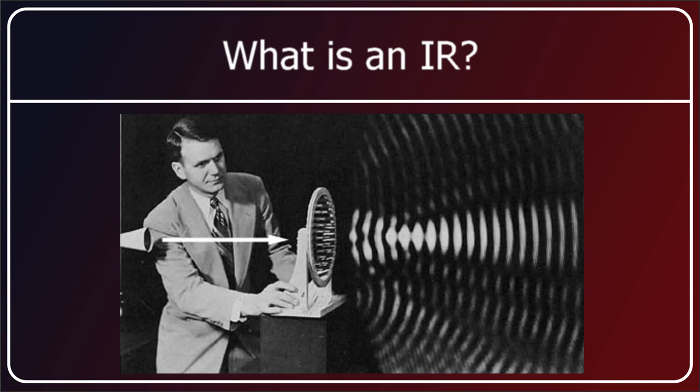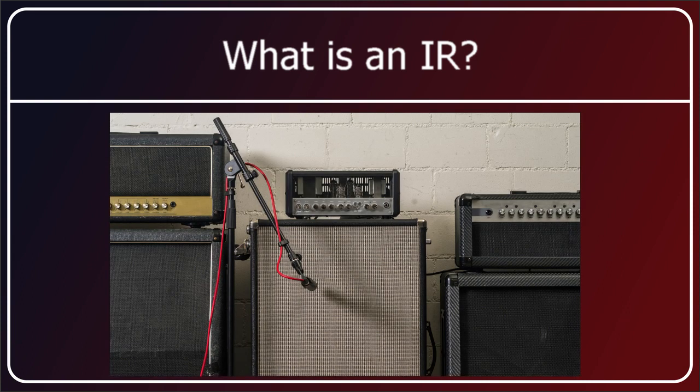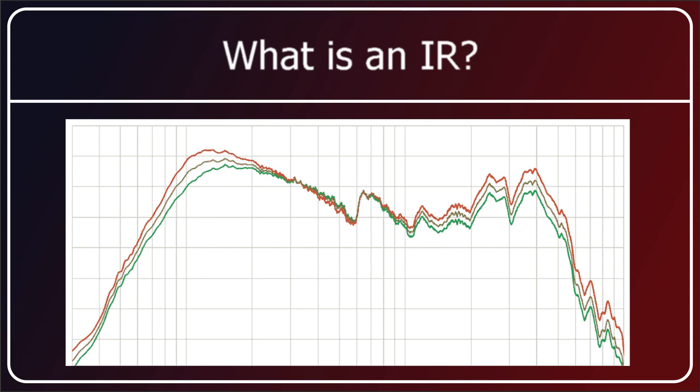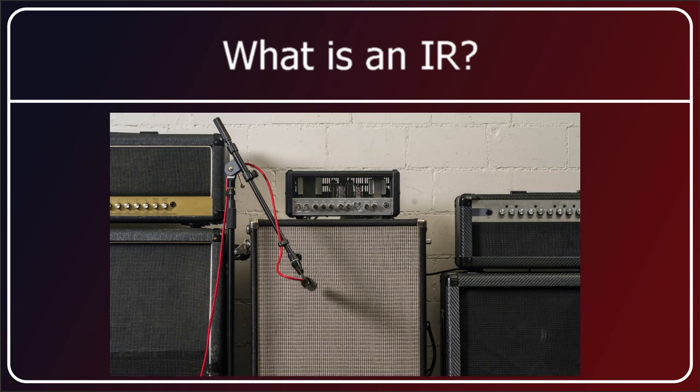So the person making an IR will take a speaker cabinet, put a known sound into that speaker cabinet, and then measure the output. And by looking at the differences between the known sound he put in and the sound that came out, he can deduce what effect the speaker cabinet has had on that sound. So by applying the same change to any sound, it's as if you put that sound through the speaker cabinet that was measured.